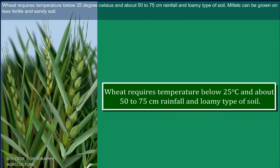Wheat requires temperature below 25 degrees Celsius, about 50 to 75 cm of rainfall, and loamy type of soil.